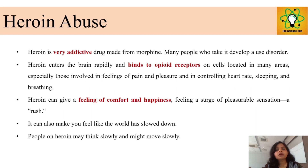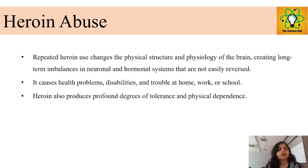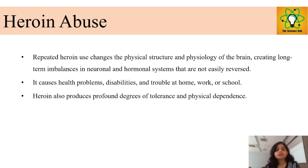Heroin majorly causes a rush in the body. It can make you feel like the world is slowed down — people on heroin may think and move slowly. Repeated heroin use changes the physical structure and psychological functioning of the brain. It also causes imbalance in the neurohormonal system and leads to health problems, disability, and trouble at home, school, or work.